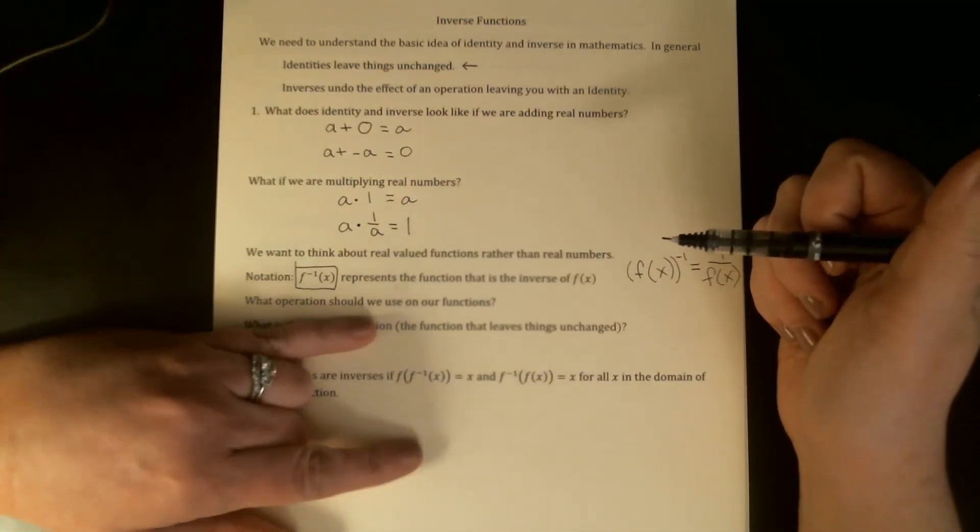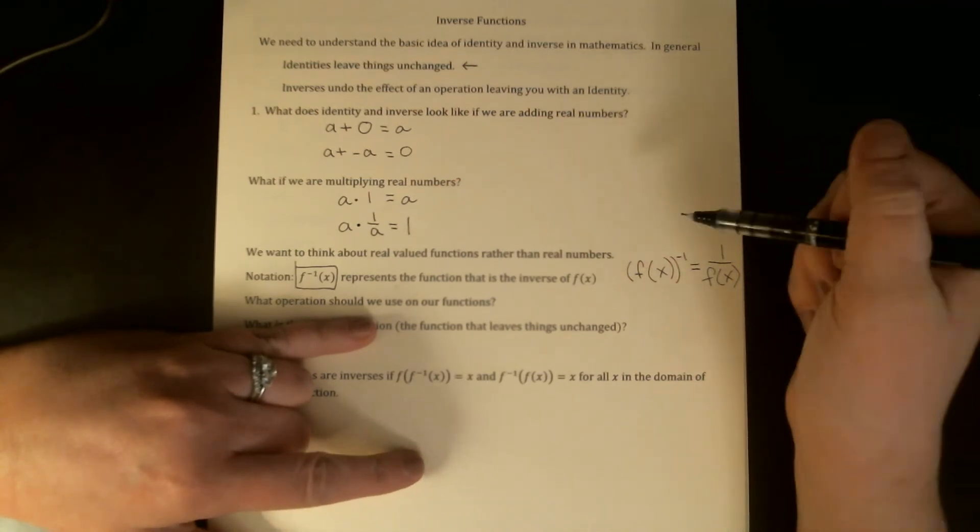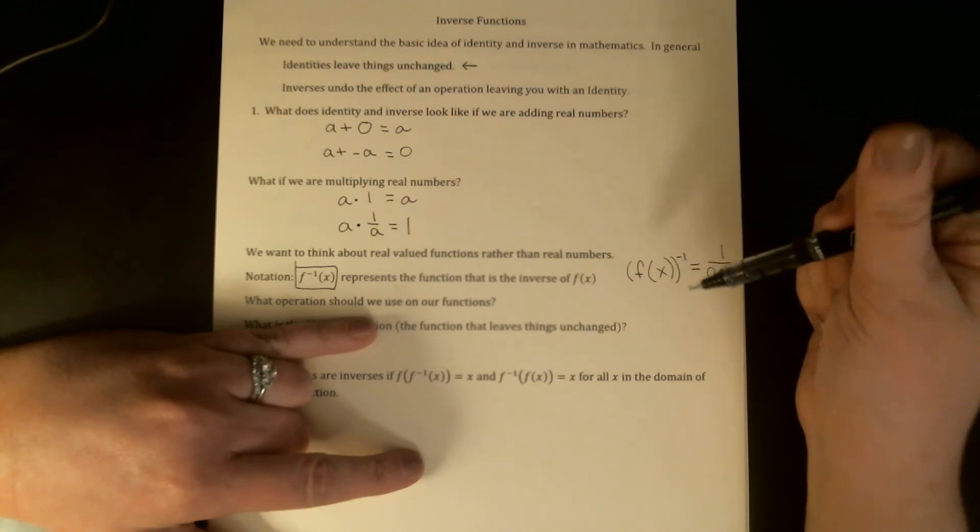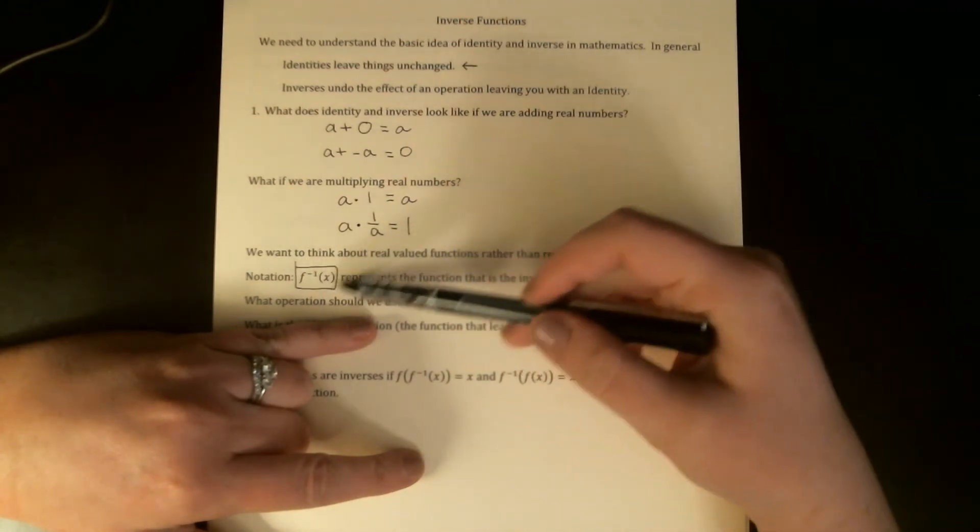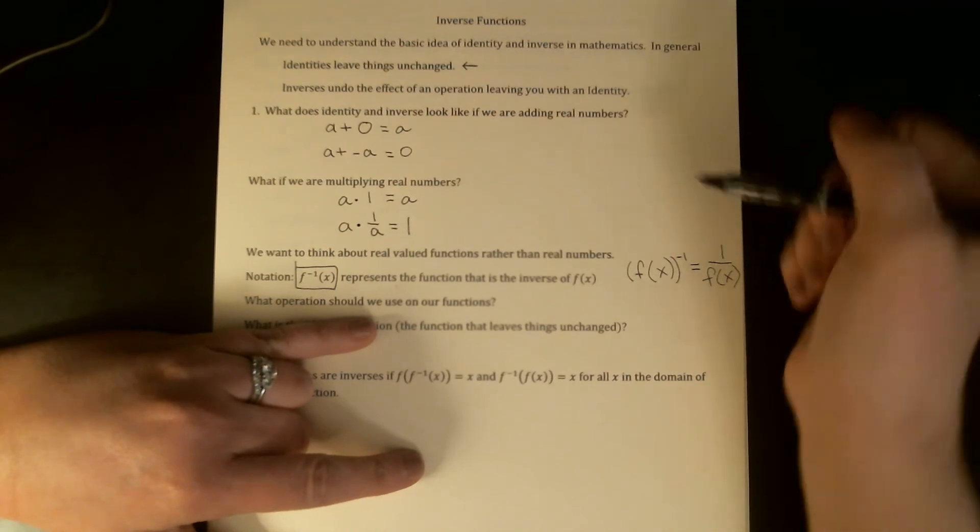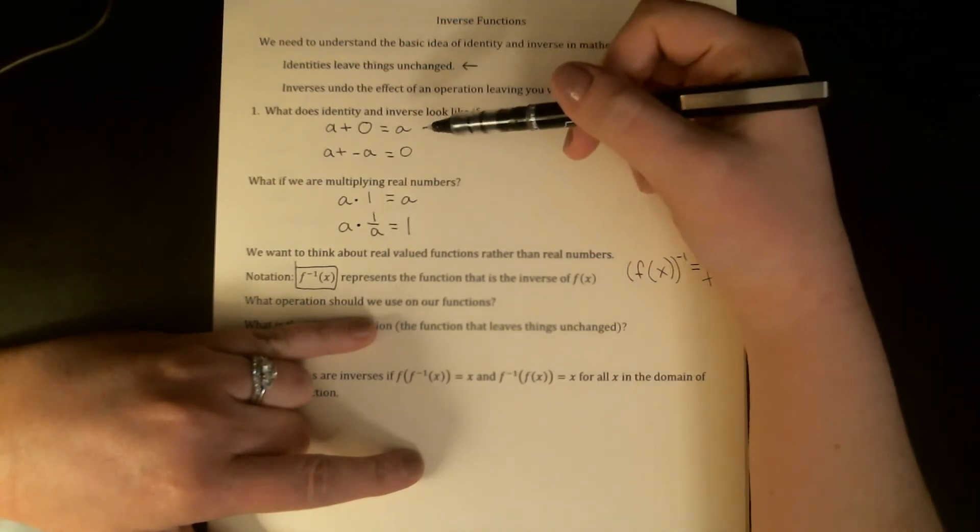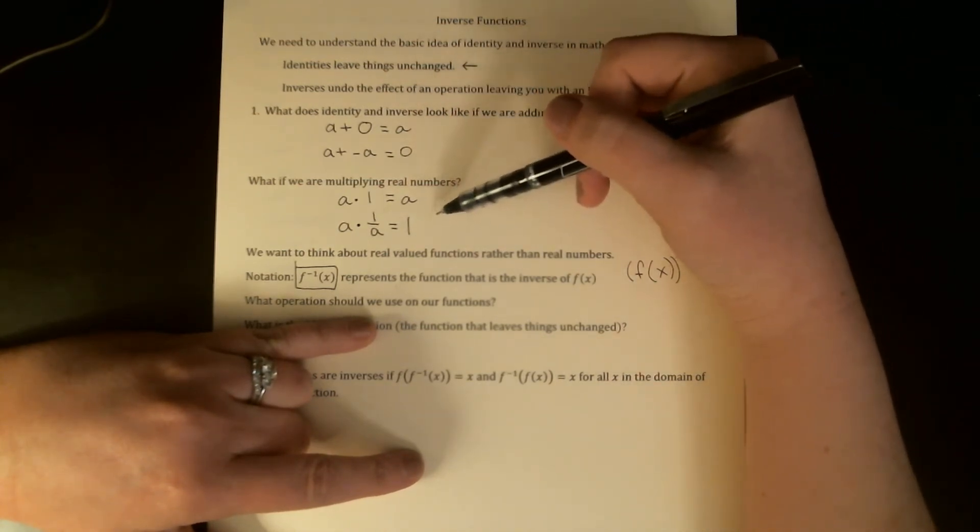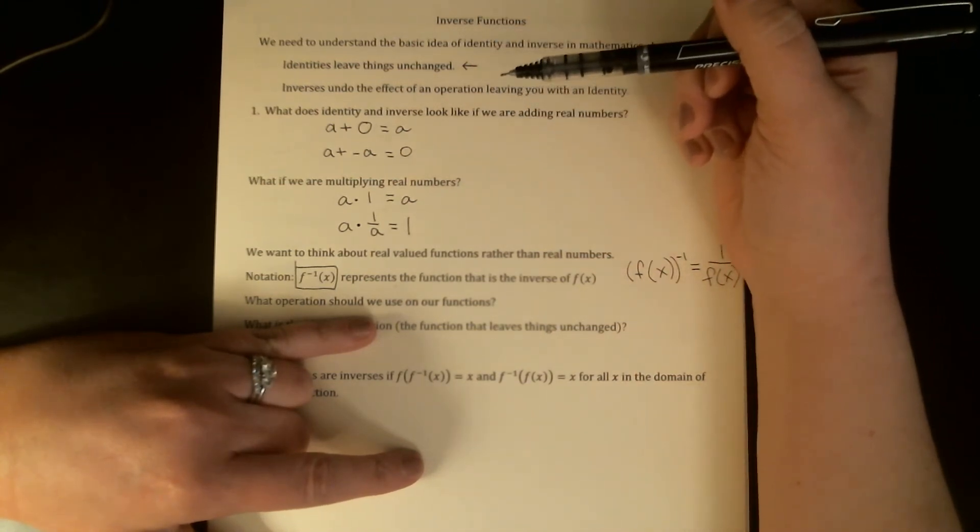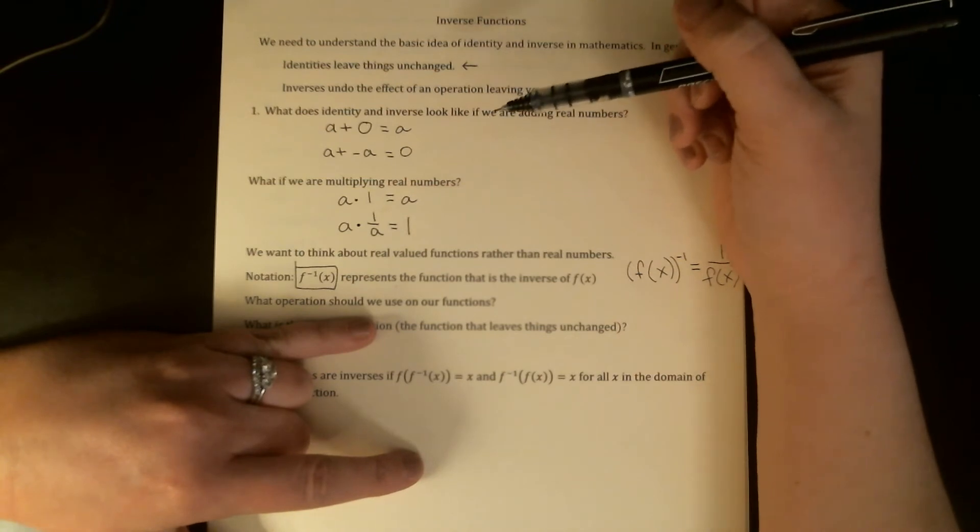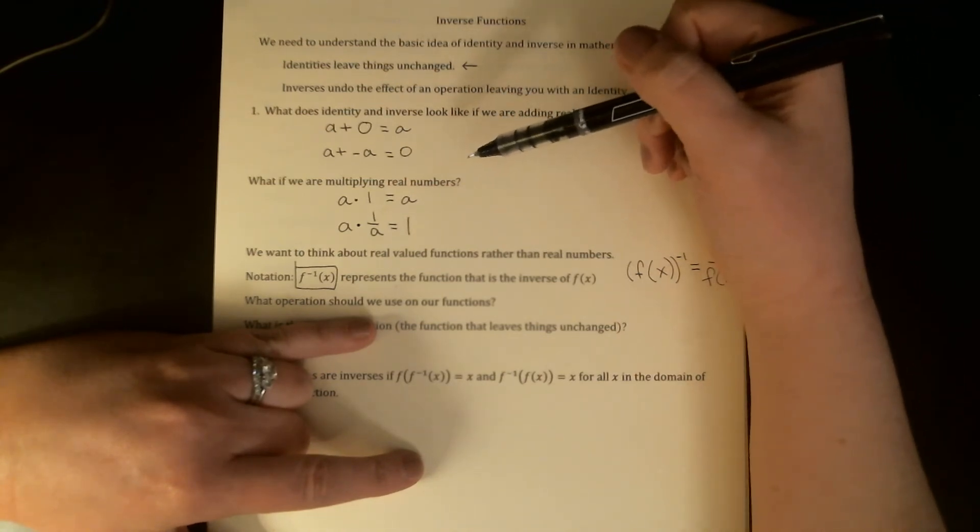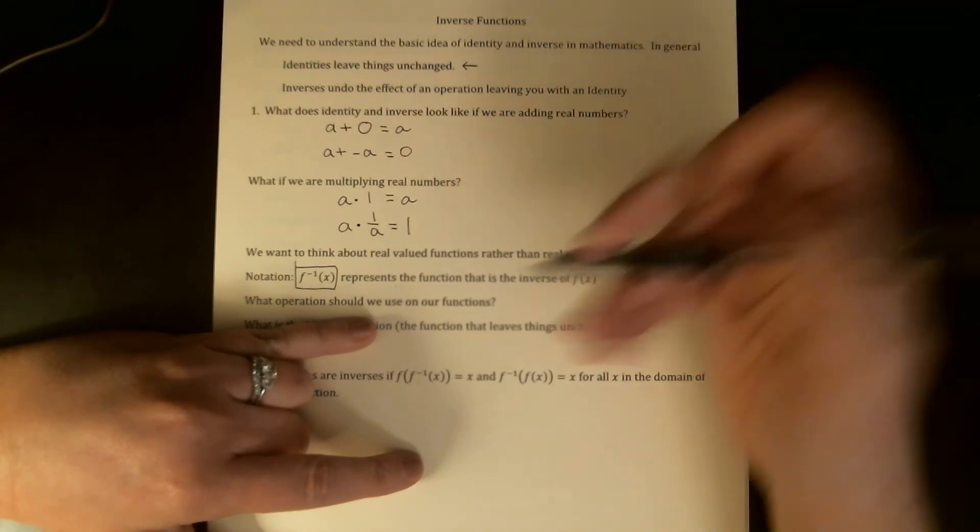The next big question that we have to answer: we've decided that we're working with real valued functions, we've got some notation for what an inverse function is. We have to decide what operation we're using. When we were working with real numbers, we had addition, we had multiplication. We could have tried others and come up with identities and inverses. You can do a lot of those same operations on functions: you can add functions, subtract, multiply, divide. The one we're really interested in is composition.